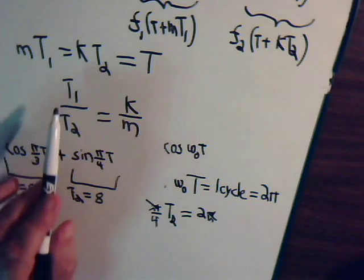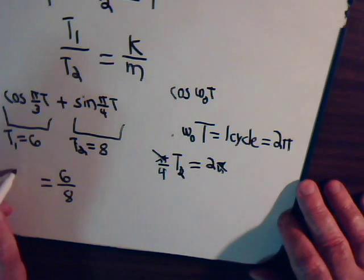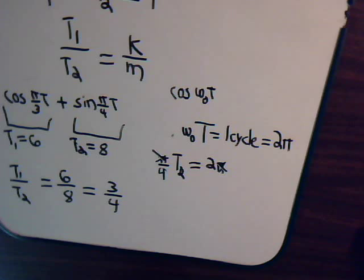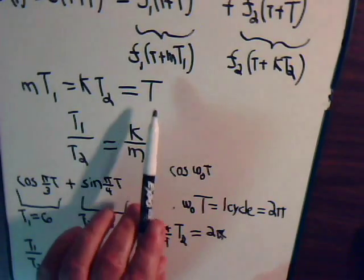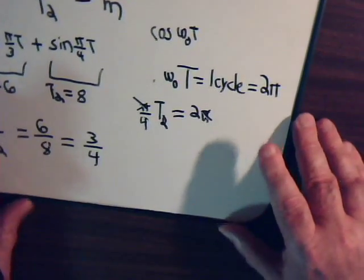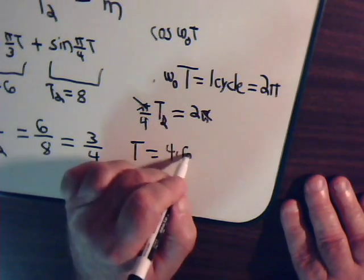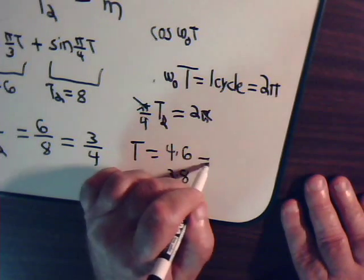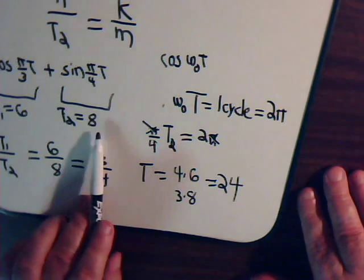So if we divide t1 by t2, we're going to have six over eight equals t1 divided by t2. But we can reduce that down. That's equal to three over four. So we have four times t1 equals three times t2. And that's what T is for our function that we get by adding these two together. So we have T, from adding these two together, equals four times t1, four times six, or three times t2, three times eight. Either way, it equals 24.